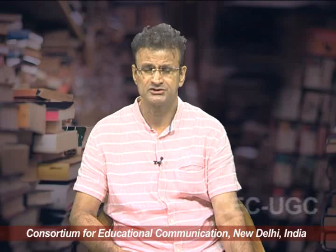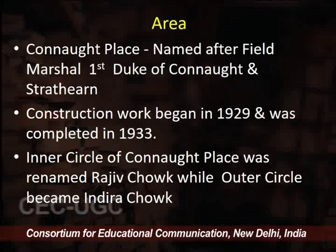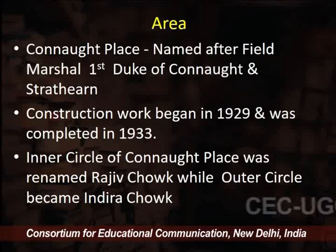Georgian architecture was used for Connaught Place and it was modeled after the Royal Crescent in Bath. While the Royal Crescent is semi-circular and a three-storey residential structure, Connaught Place had only two floors making almost a complete circle, intended to house commercial establishments on the ground floor with residential space on the first floor. The circle was eventually designed with two concentric circles creating an inner circle, middle circle and outer circle.